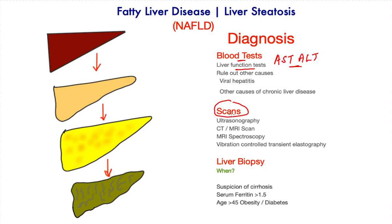Scans are an important non-invasive way of diagnosis. Typical features are seen with ultrasonography, CT, and MRI scan. However, these would not normally differentiate between fatty liver disease and steatohepatitis or fibrosis. That's where newer modalities such as MRI spectroscopy or elastography, which assesses fibrosis within the liver, are useful. The gold standard for diagnosis is a liver biopsy, but it is not needed in every patient — only if fibrosis may have developed without a good explanation, or if serum ferritin levels are high, specifically in patients over 45 with obesity and diabetes. The biopsy will establish the diagnosis as well as its extent.